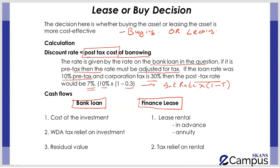Looking at the cash flows for the bank loan scenario, the three most important cash flows to include are: the cost of investment, the written down allowance and tax relief on the investment, and the residual value. These are the key items when calculating the NPV under the bank loan option.